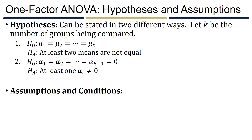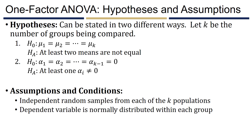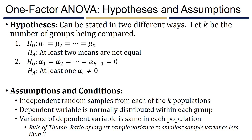There are a few assumptions and conditions required for one-factor ANOVA. We need independent random samples from each of the k populations. The dependent variable must be normally distributed within each individual group. And the variance of the dependent variable should be the same — or roughly the same — across all groups. The rule of thumb is that the ratio of the largest to smallest sample variance should be less than 2.